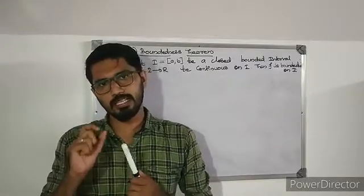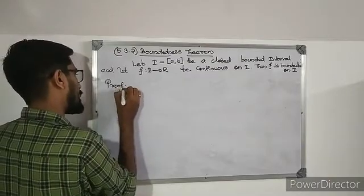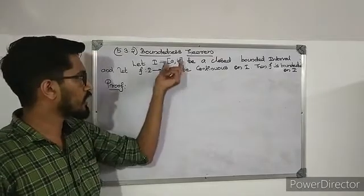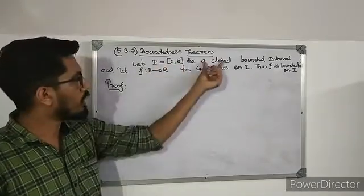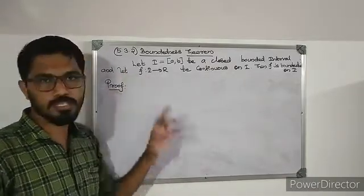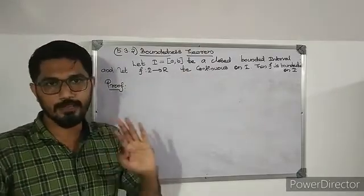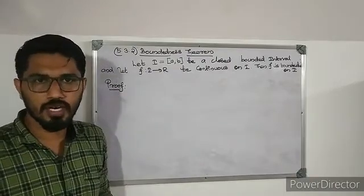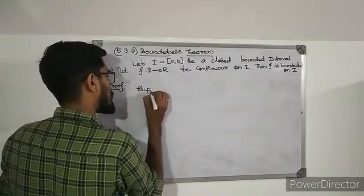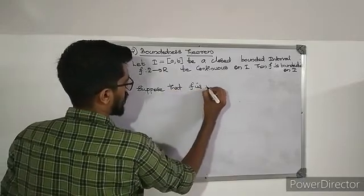The boundedness theorem — Proof. Statement: Let I = [a, b] be a closed and bounded interval. Let f from I to R be a continuous function on I. We need to prove that f is bounded. To prove this, we use proof by contradiction. Suppose that f is not bounded.